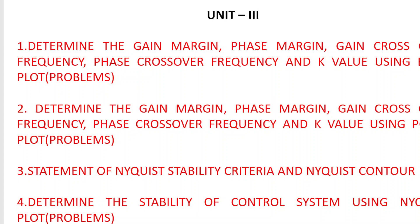The fourth topic is: determine the stability of a control system using Nyquist plot — a long answer problem. The third topic in unit 3 is the statement of Nyquist stability criteria and Nyquist contour, which you will get for a short answer.